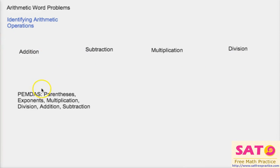The specific order to this is known as the PEMDAS mnemonic: parentheses, exponents, multiplication, division, addition, subtraction. We've all learned this before, but it is imperative that you know the specific order, because a small mishap can cause you to make a huge mistake on your SAT.